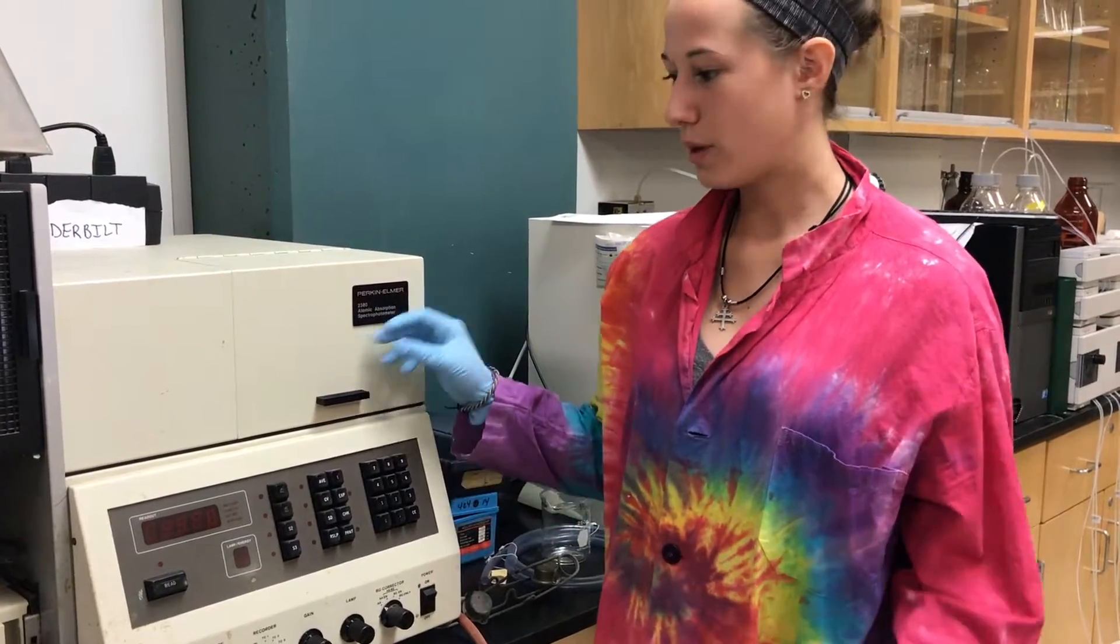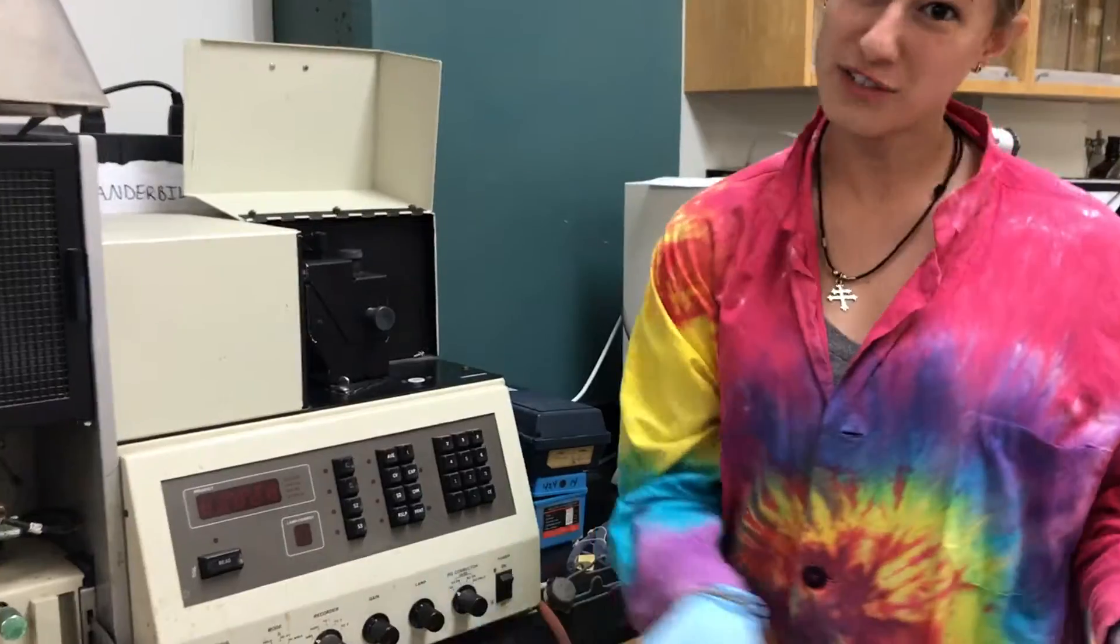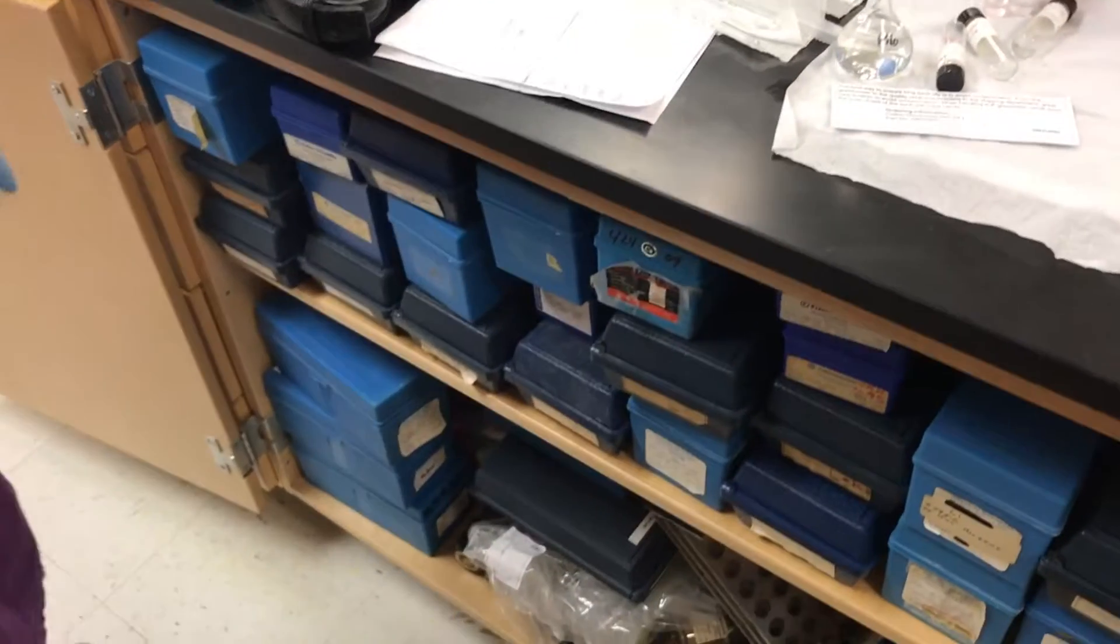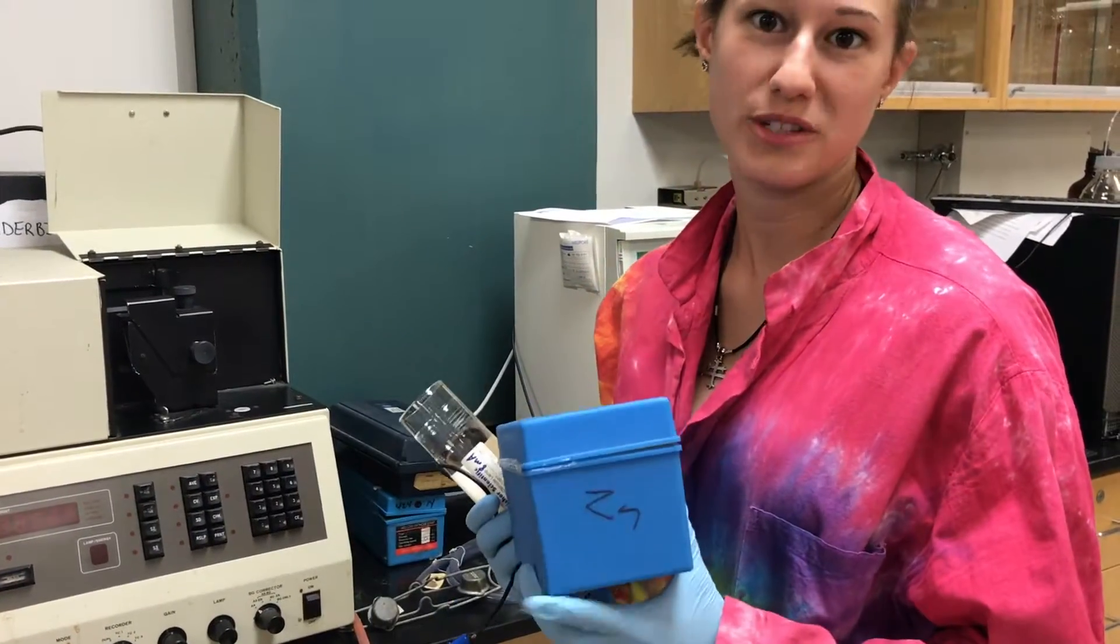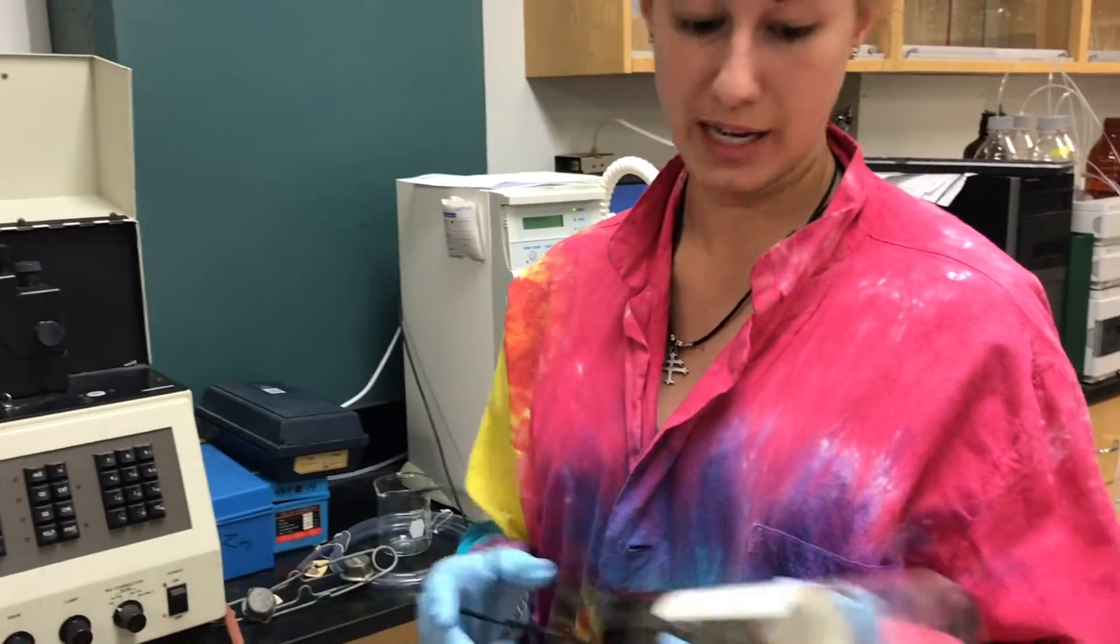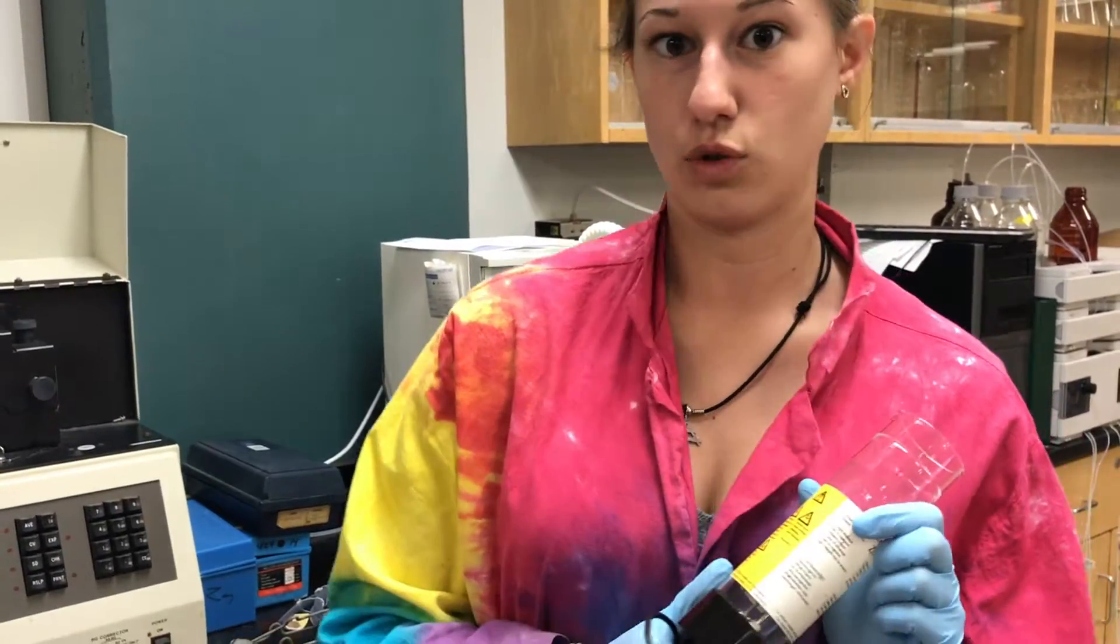Before we can get started, we have to insert a lamp into the instrument. Here's where you can find the lamps. You choose a lamp based on the element that you're trying to analyze. For our experiment, we're going to use a zinc lamp.